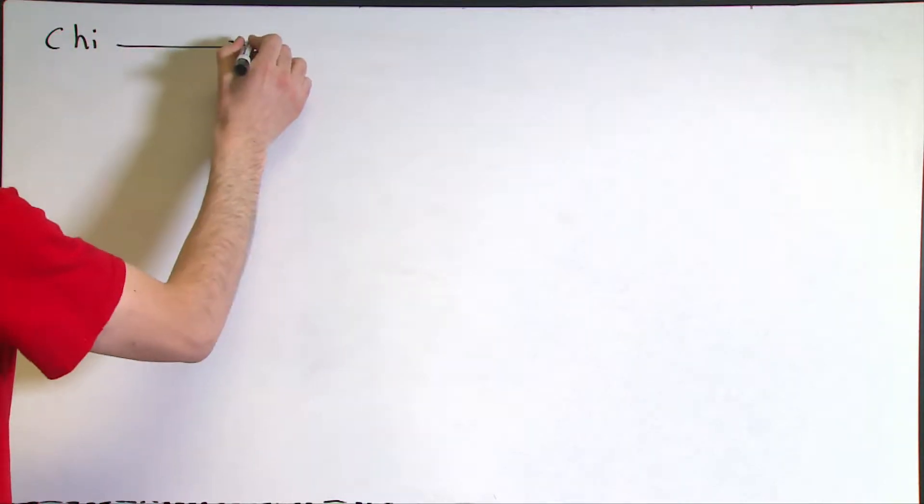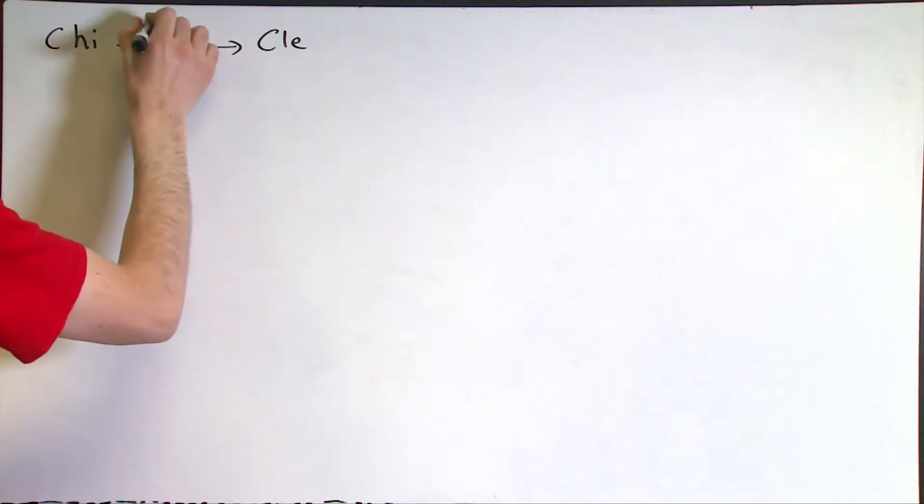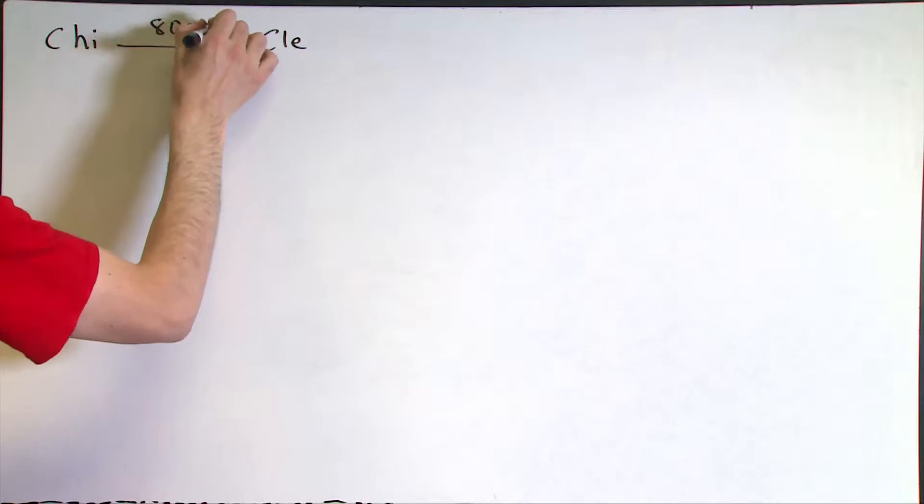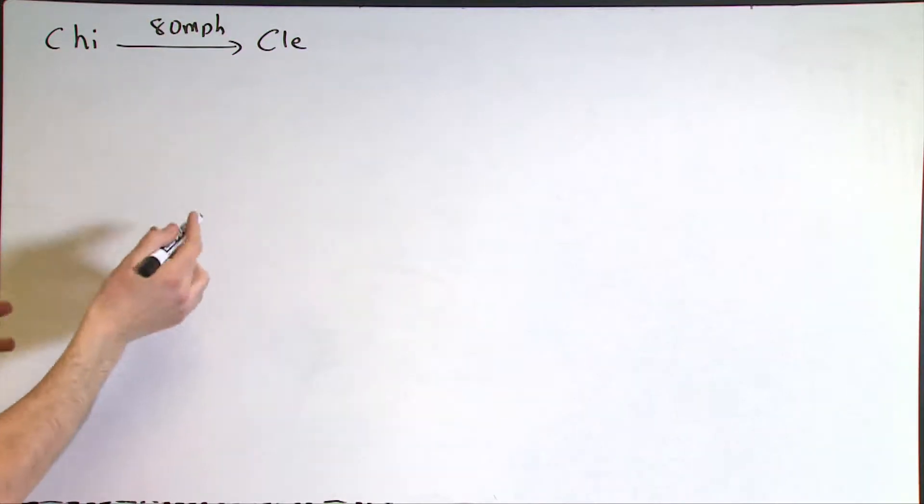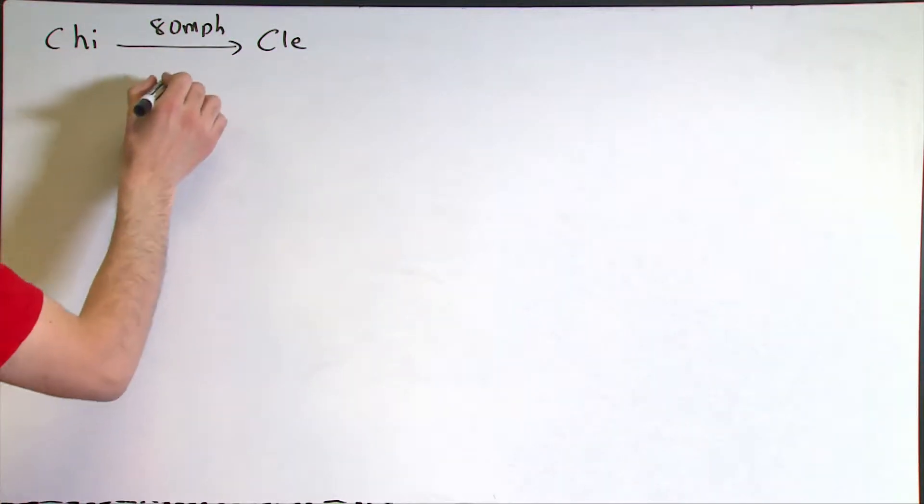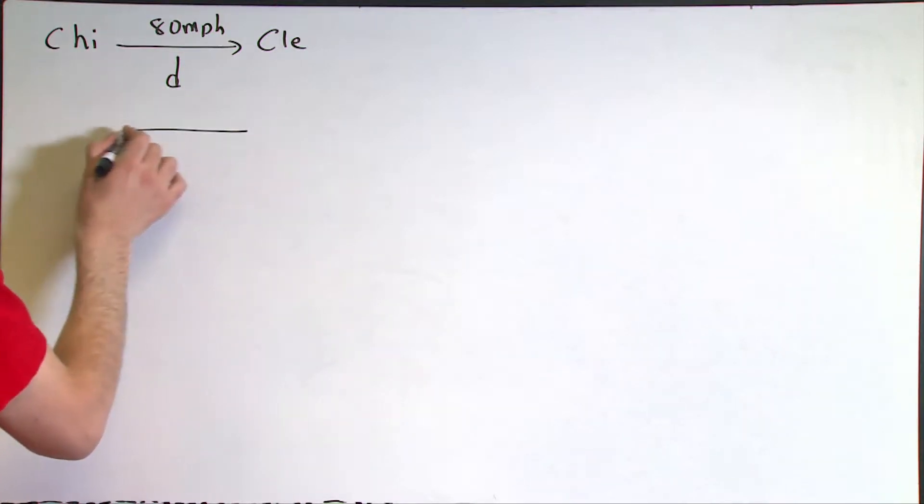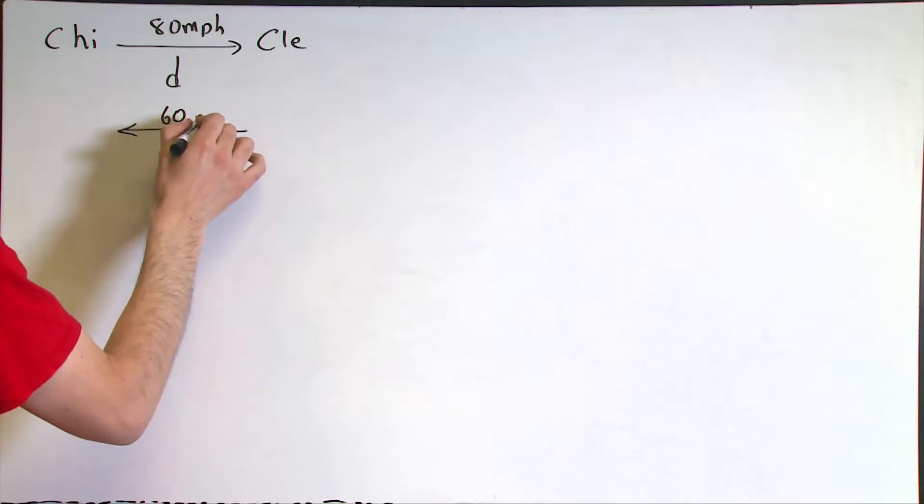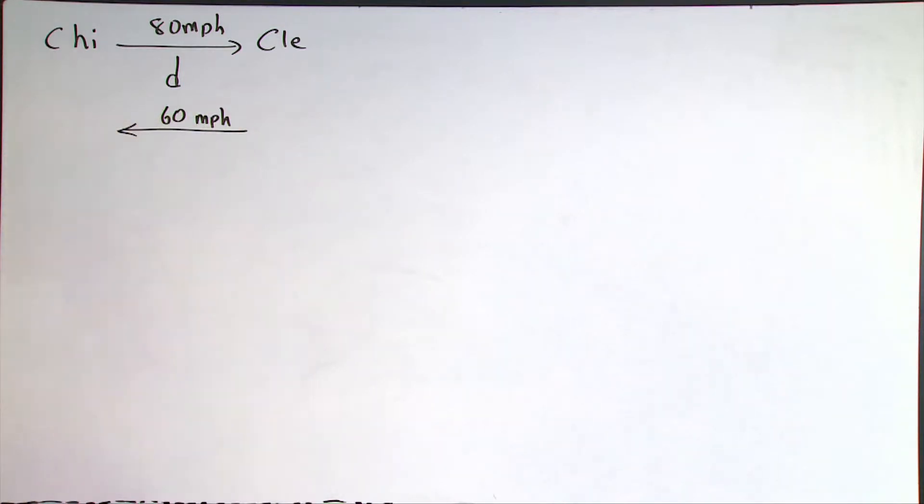The actual average is as follows. From Chicago to Cleveland, Michael traveled at 80 miles per hour, right? And let's call the distance between two cities D. On the way back, he traveled at 60 miles per hour. He traveled slower.